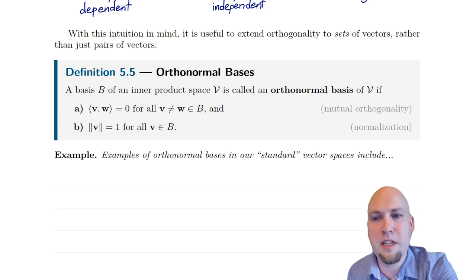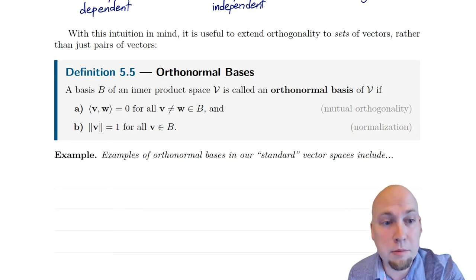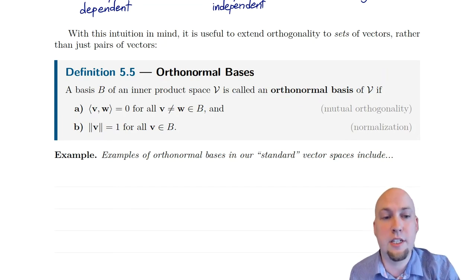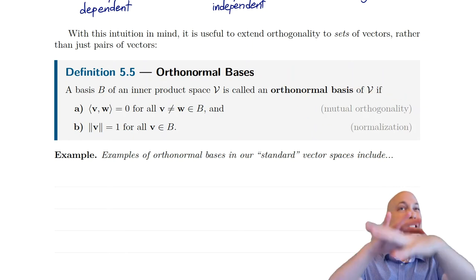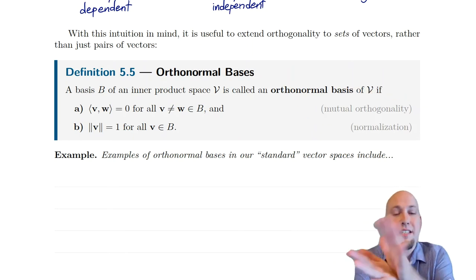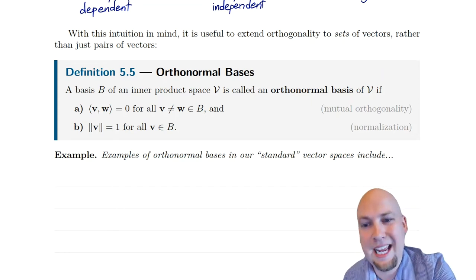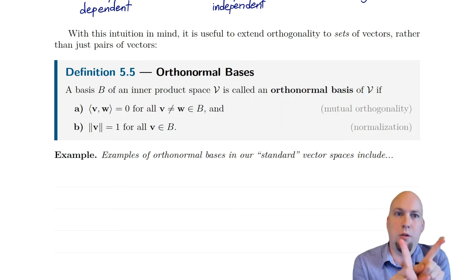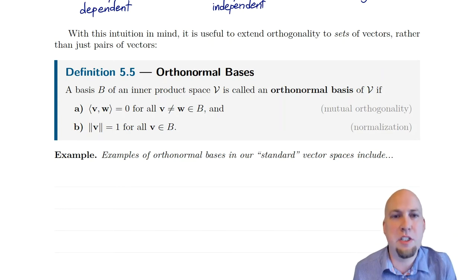Here's the setup. Suppose you've got any basis of an inner product space V. We say that's an orthonormal basis if it has some extra conditions. The first extra condition is what we call mutual orthogonality: every vector in that basis is orthogonal to everything else in that basis. So if you pick any two vectors v and w, their inner product equals zero. They're all orthogonal to each other — all as independent from each other as possible.